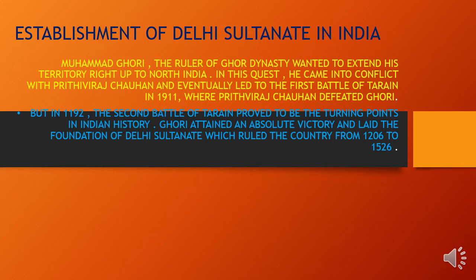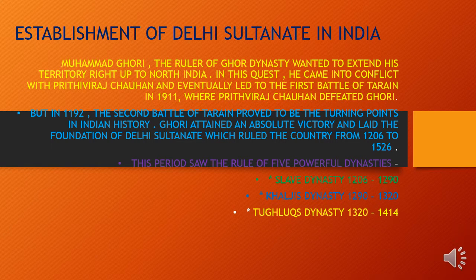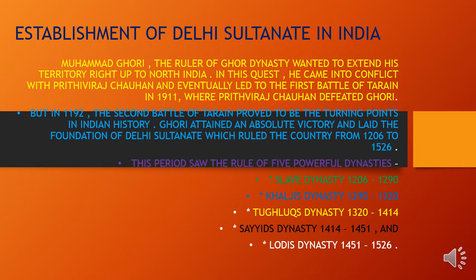Muhammad Gauri established the Delhi Sultanate in India that lasted from 1206 to 1526. This period saw the rule of five powerful dynasties: the Slave dynasty (1206–1290), the Khalji dynasty (1290–1320), the Tughlaq dynasty (1320–1414), the Sayyid dynasty (1414–1451), and the Lodi dynasty (1451–1526).